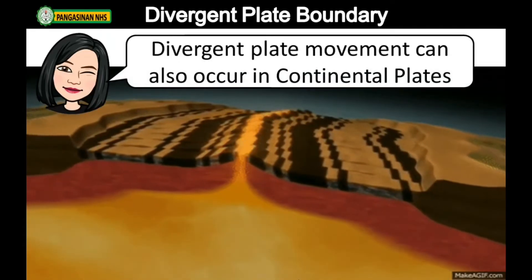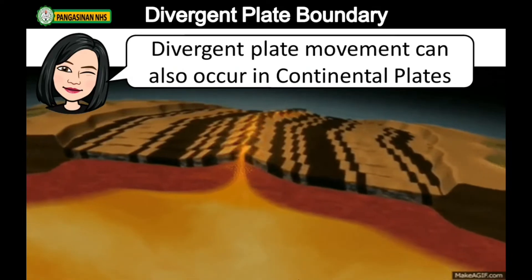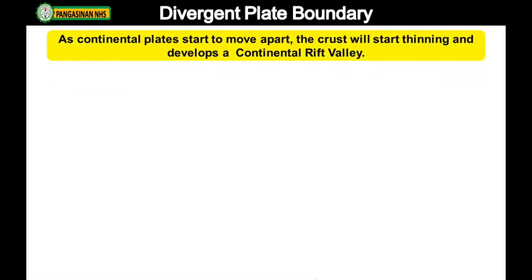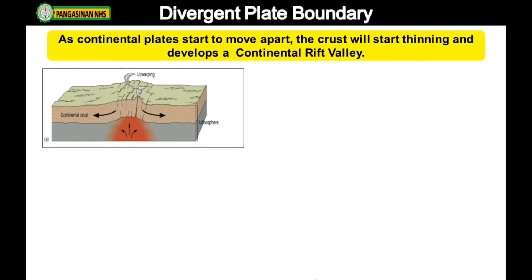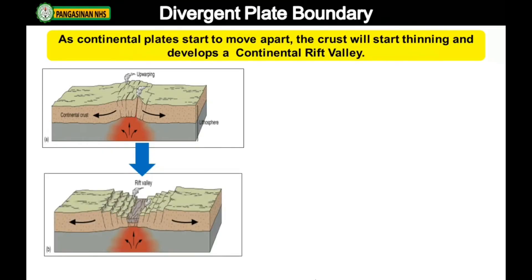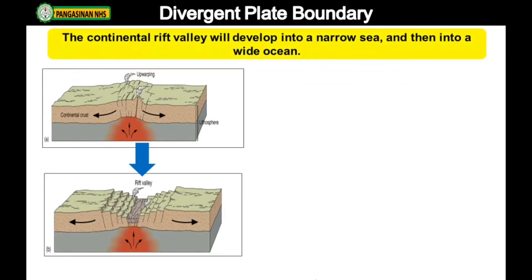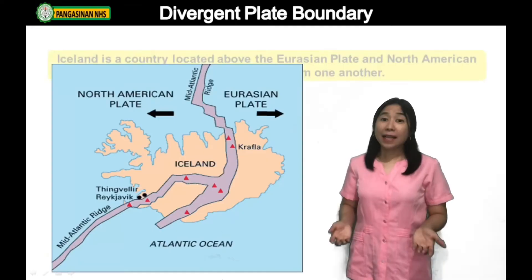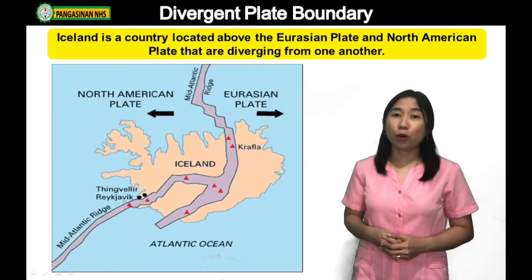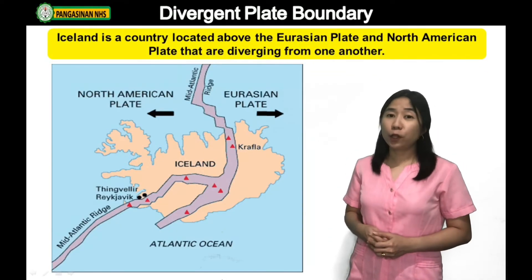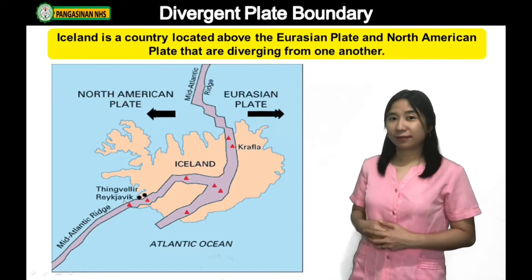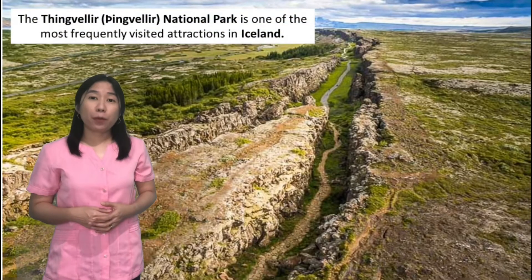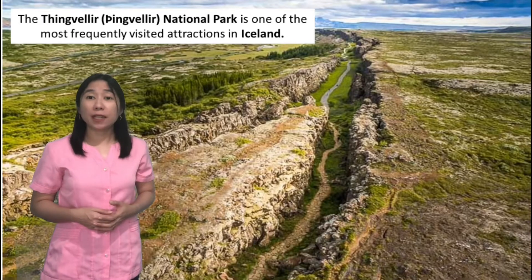Divergent plate movement can also occur in continental plates. As continental plates start to move apart, the crust will start thinning and develops a continental rift valley. The continental rift valley will develop into a narrow sea and then into a widened ocean. Iceland is a country located above the Eurasian plate and North American plate that are diverging from one another. The Thingvellir National Park is one of the most frequently visited attractions in Iceland.